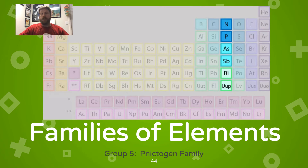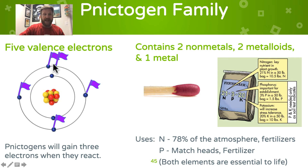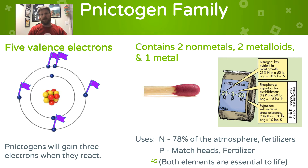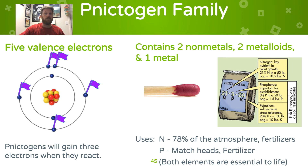Group 15 has nitrogen at the top, and an old name for it is the nitrogen family. These elements have five valence electrons and will gain three electrons when they react. This family contains two non-metals at the top, then two metalloids, and a metal at the bottom. Nitrogen makes up 78% of our atmosphere and is also used in fertilizers. Phosphorus can be found in match heads and fertilizers. Both nitrogen and phosphorus are essential to life — you need them for DNA and RNA, and nitrogen is needed for all your proteins.